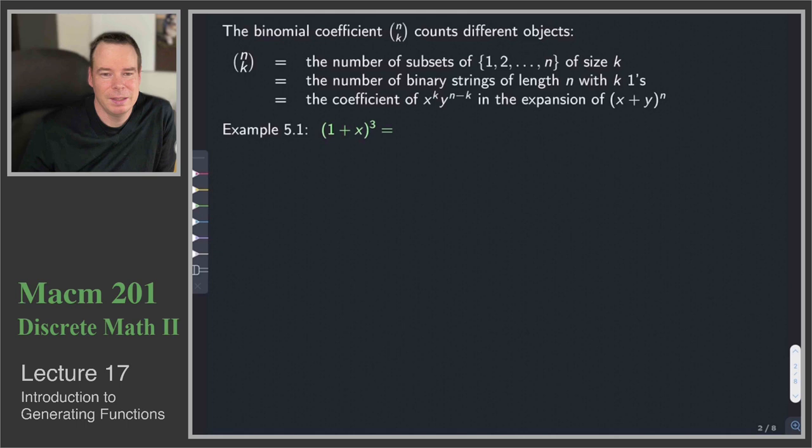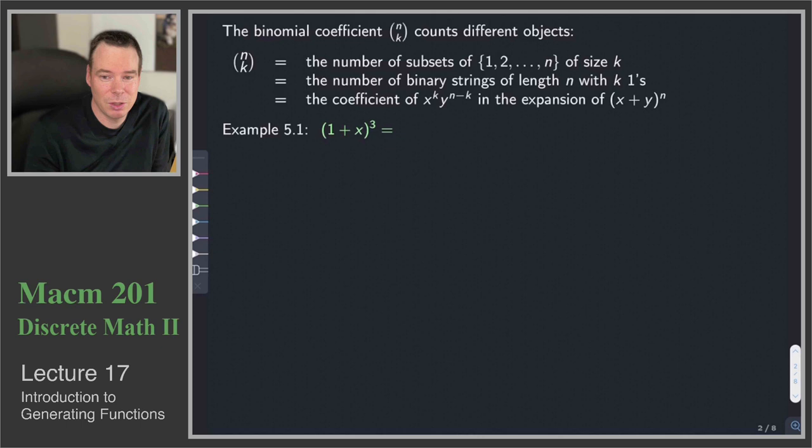These three things are interesting in that the first two were objects that we were interested in counting, whereas the last one came from algebra. This starts to indicate that maybe in algebra we can pull out some ideas to do with counting — maybe lurking in algebra there's actually some counting going on and we can exploit that. That's really what generating functions are all about: getting algebra to do the counting for us.